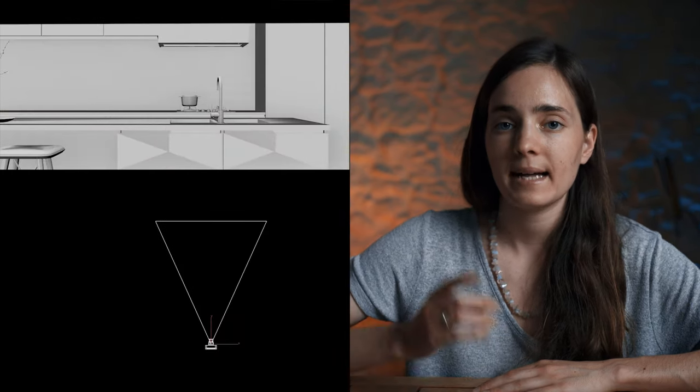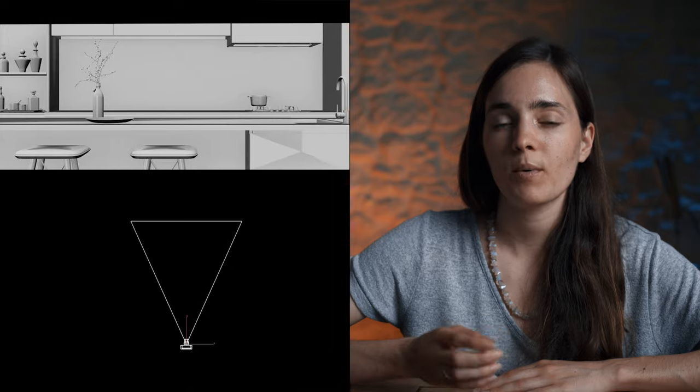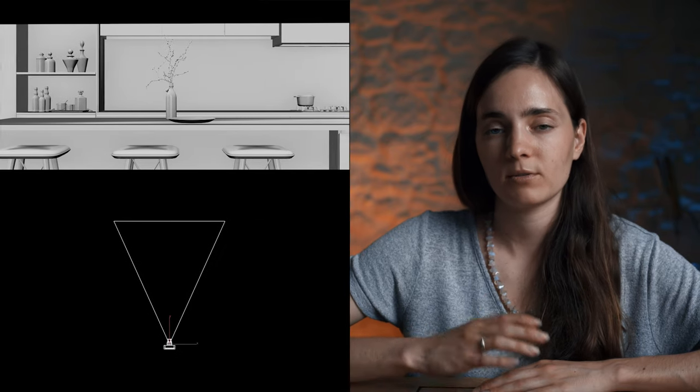The same as in the dolly shot, the entire camera is moving, but now instead of going in and out, you're going left to right or right to left. You can use this, for example, when you want to follow a moving object, or when you want to create a more close-up shot of the space and at the same time show more of the side context.